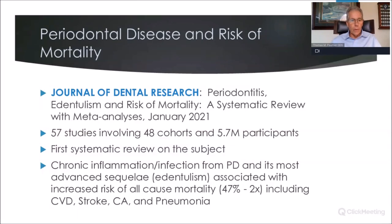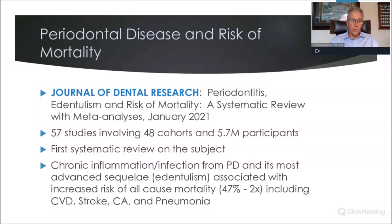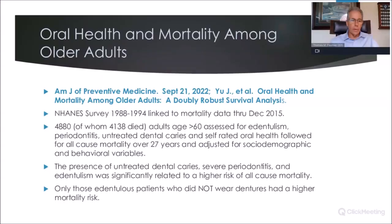Recent studies on periodontal disease and risk of mortality — just out in the last two years. The first, in the Journal of Dental Research — 'Periodontitis, Edentialism, and Risk of Mortality: A Systematic Review' — looked at 57 studies with nearly 6 million participants. It was the first systematic review on this topic, and it found that chronic inflammation or infection from periodontal disease, and tooth loss leading to edentialism, was associated with increased risk of all-cause mortality — anywhere from 47% to twice as likely to die of any particular cause if you simply had periodontal disease versus patients who did not.